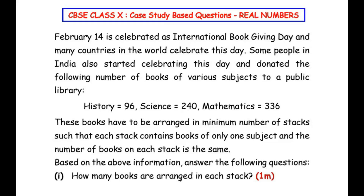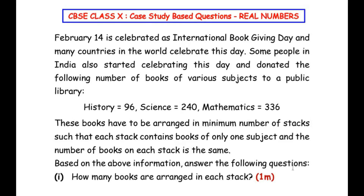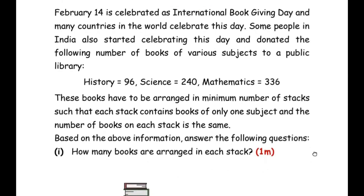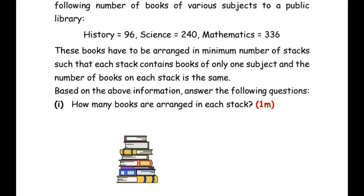The first question is: how many books are arranged in each stack? Let us first understand how a book stack looks. We have to make sure there are a minimum number of stacks, each stack has only one subject, and all stacks have the same number of books. Since minimum number of stacks is the keyword, we need to find the HCF — the Highest Common Factor — of these three numbers.